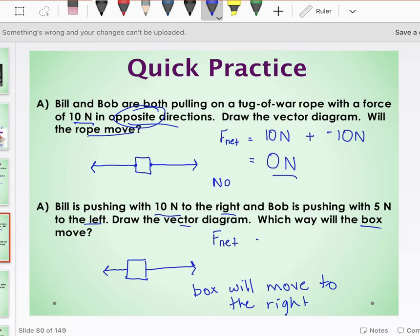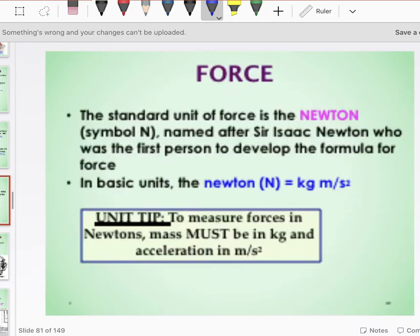So F net, force net, is equal to, now we know according to our conventions that right is typically indicated as positive, and left is typically indicated as negative. So I'm doing vector addition, 10 newtons plus negative 5 still is 5 newtons, and it's positive. And that positive indicates to the right.